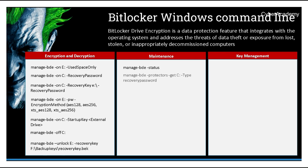Now we come into the maintenance section. With manage-bde status we can see the status, and we can also add or get protectors. The protectors parameter allows us to interact — get or set types of protectors — on a BitLocker-encrypted drive. Here we are reading protectors from the C drive, specifying the type as recovery password, so we are listing the recovery password as a protector from C drive.